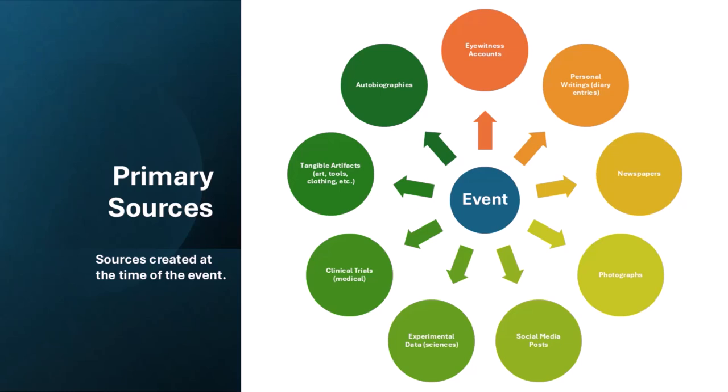In the natural and social sciences, examples of primary sources include experimental research reports, survey data, or clinical trials.